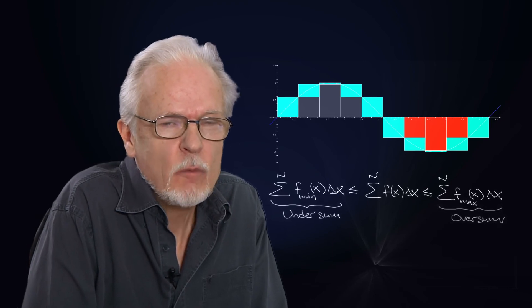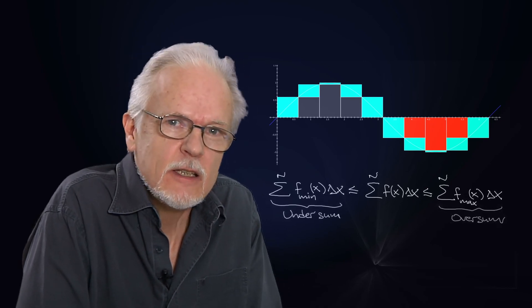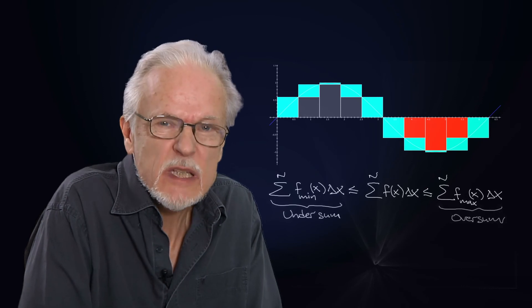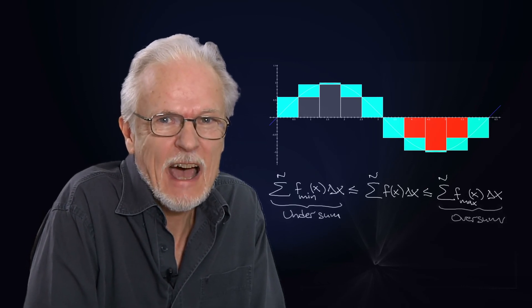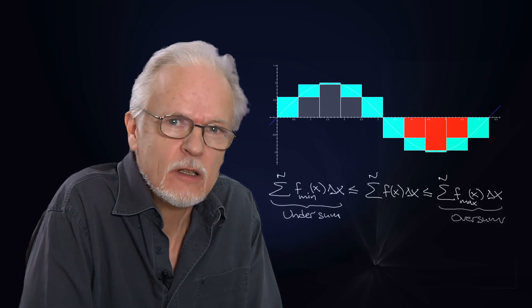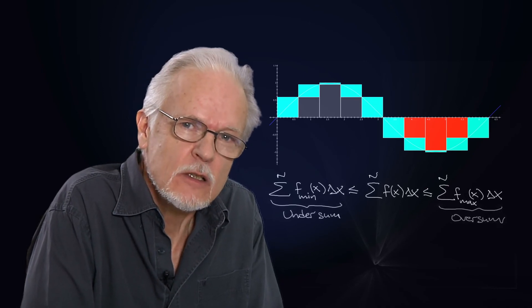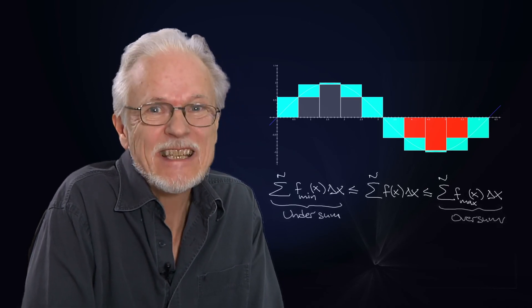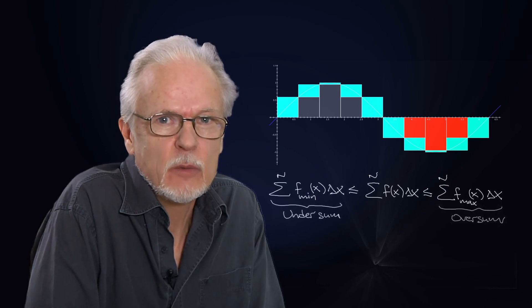And it is obvious from the figure that the undersum will be smaller than that value, because we are always staying underneath the value of the function. And the oversum is always going to be larger, or at least as large as the number we are looking for.